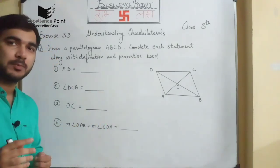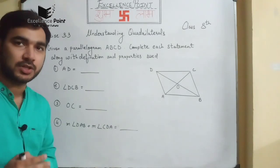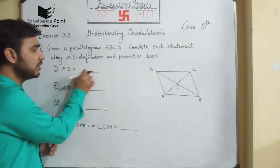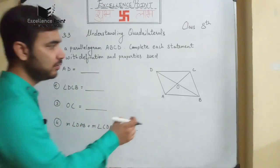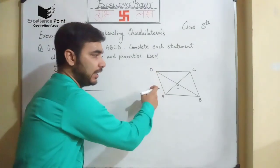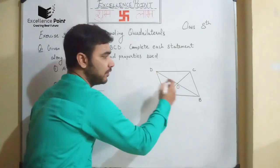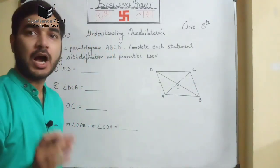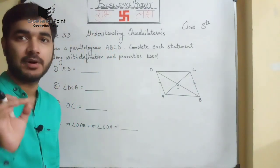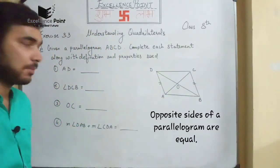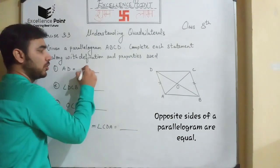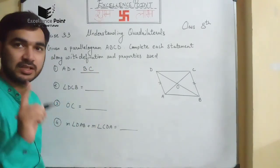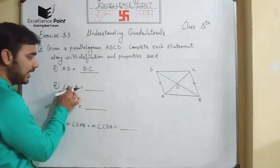We have to use the properties to solve this question and fill in the blanks. AD is equal to dash — so first of all we will see AD, and AD should be equal to BC. Why? Because opposite sides of a parallelogram are equal. So AD should be equal to BC — that is the first answer.